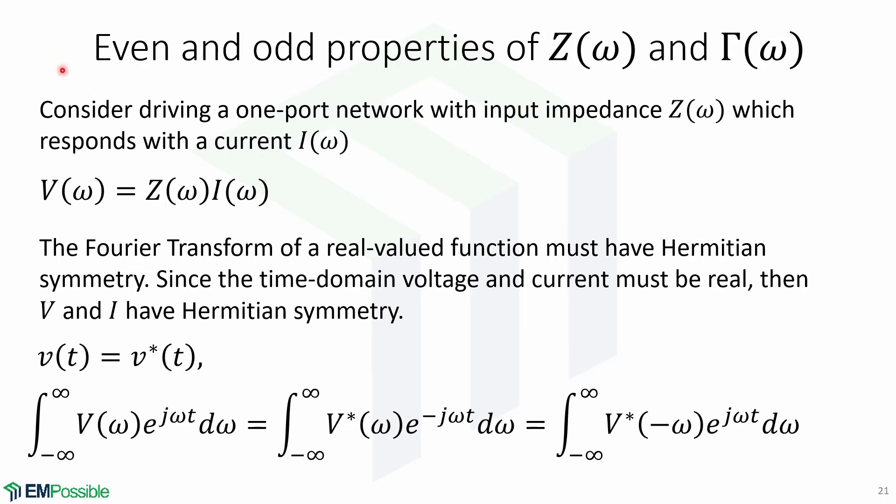Now we will look at even and odd properties of the impedance and reflection coefficient as functions of frequency. Consider driving a one-port network with input impedance Z of omega which responds to a current I of omega. The Fourier transform of a real-valued function must have Hermitian symmetry. Since the time domain voltage and current must be real, then V and I have Hermitian symmetry.